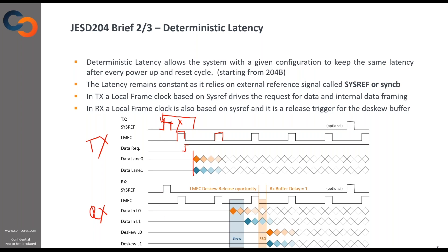On the RX side, the same thing: you get a rising edge on SysRef and generate your local multi-frame clock, which dictates the timing. The lanes will appear with some skew due to different factors, and they are placed into a des-queue buffer that realigns them and removes the skew. To achieve deterministic latency, data is taken out of the des-queue buffer at a known point in time dictated by the local multi-frame clock plus some RBD — one RX buffer delay — where you can control how far later in time you want to release the buffer.